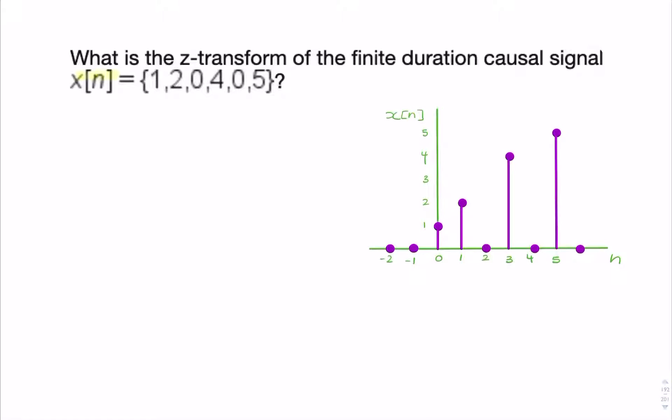Here, we're given a discrete time signal x of n that looks something like this. And we're asked to find the z-transform.